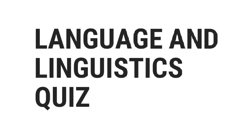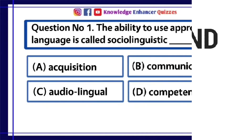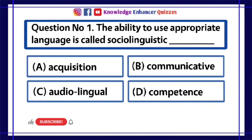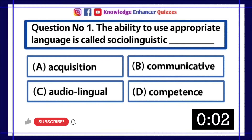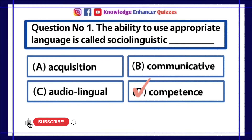Knowledge Enhancer Quizzes presents Language and Linguistics Quiz. Question Number 1: The ability to use appropriate language is called sociolinguistic dash. A. Acquisition, B. Communicative, C. Audiolingual, D. Competence. Option D is the right answer.